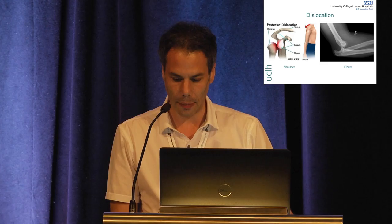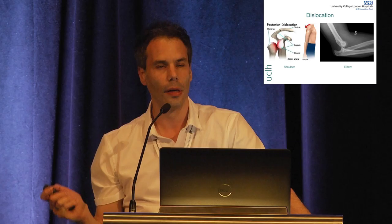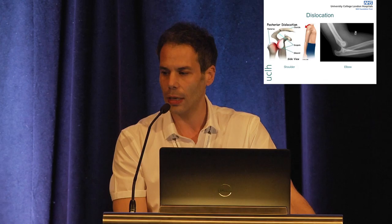A couple of examples here. We've got the shoulder — you can see the head of the humerus has come straight out the back of the glenoid. It's a posterior dislocation of the shoulder, so it's slipped fully out of the glenoid fossa. It's a very clear, full dislocation.